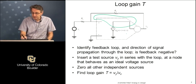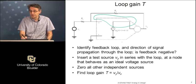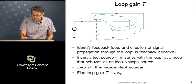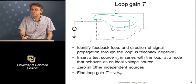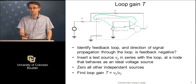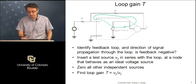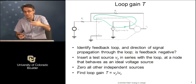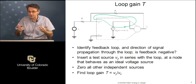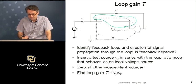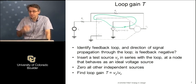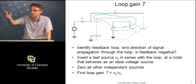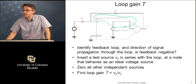When you identify the feedback loop, you also want to identify the direction of signal propagating through that loop. When you have op-amp type circuitry, the direction is obviously from input of the op-amp to the output of the op-amp, so there's very little doubt about that direction, but it is an item to keep in mind when you look at the feedback system.